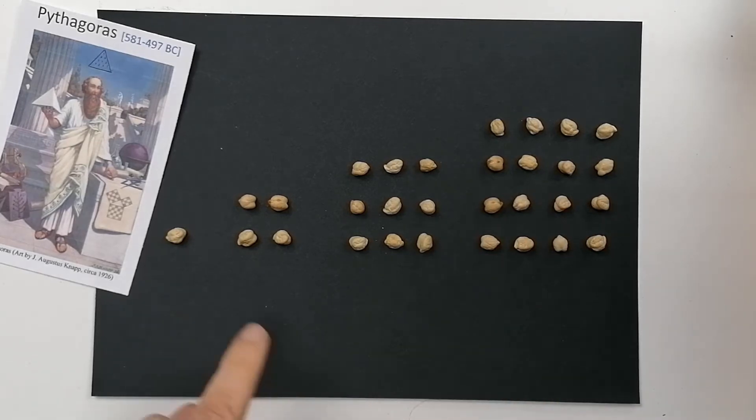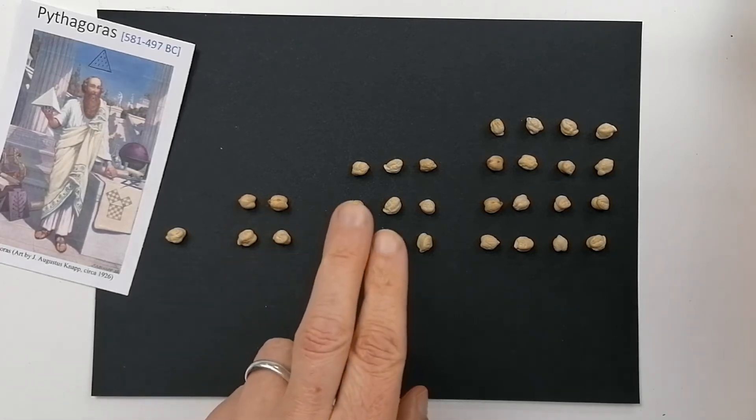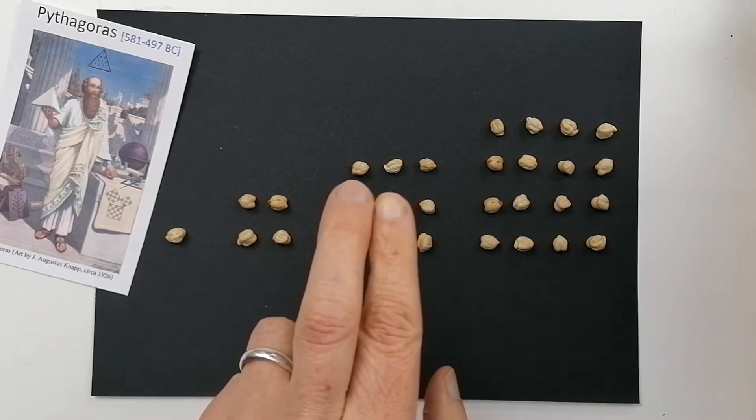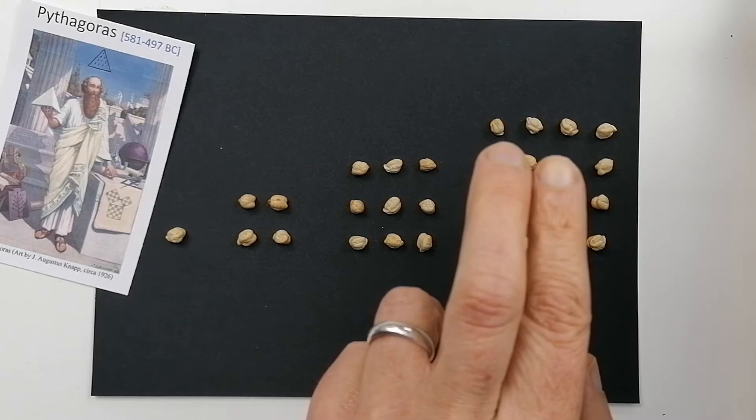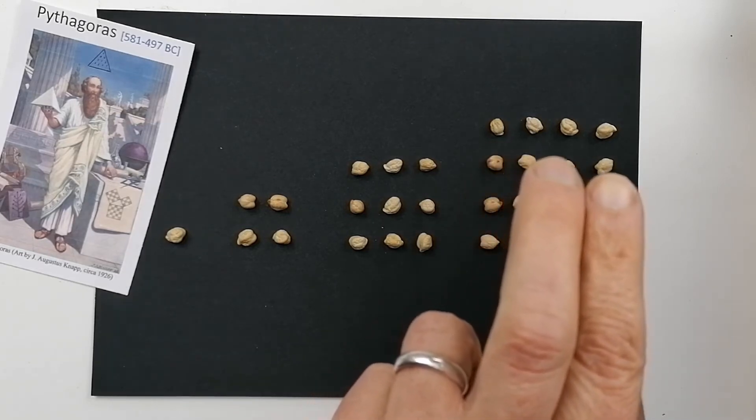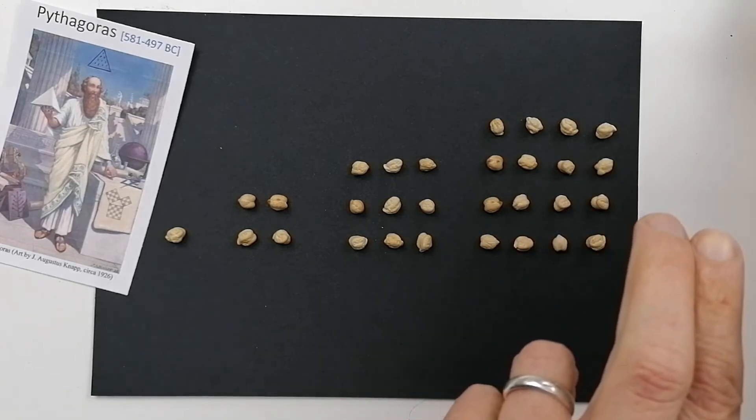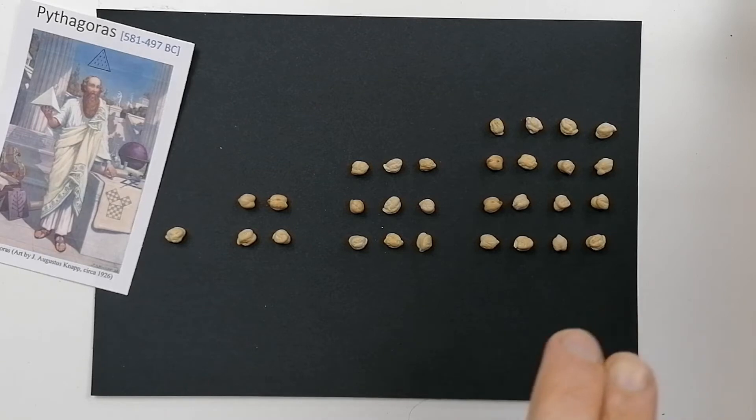But he also noticed another pattern that if you start with this one, and then the next square number, you would have one plus three, the next square number you would have four, this four here, four plus five. And then the next square number, you'd have this original nine here, that nine plus seven. So it was always adding the next odd number. So in this case, there's 16 here. So the next one would be 16 plus nine, 16 plus nine is 25. So you can see the square numbers and the patterns in the square numbers.